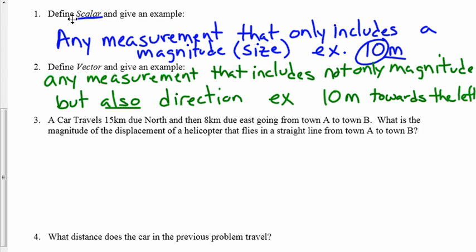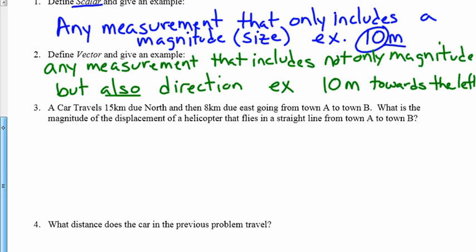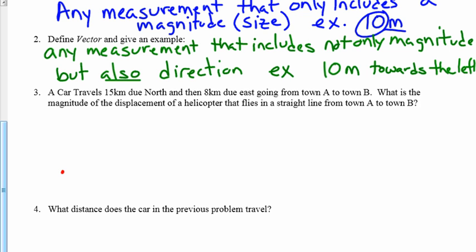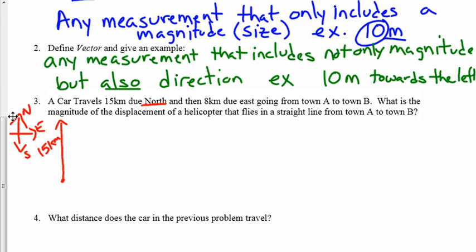So let's continue on with this idea. Question number three asks us to consider a car that's traveling fifteen kilometers due north. Right there we know that that fifteen kilometers is a vector because they also included the direction due north. It's standard notation to use north, south, east, and west when noting directions. So this car travels fifteen kilometers due north and then it travels eight kilometers due east. Notice that my fifteen kilometer vector is longer than my eight kilometer vector.